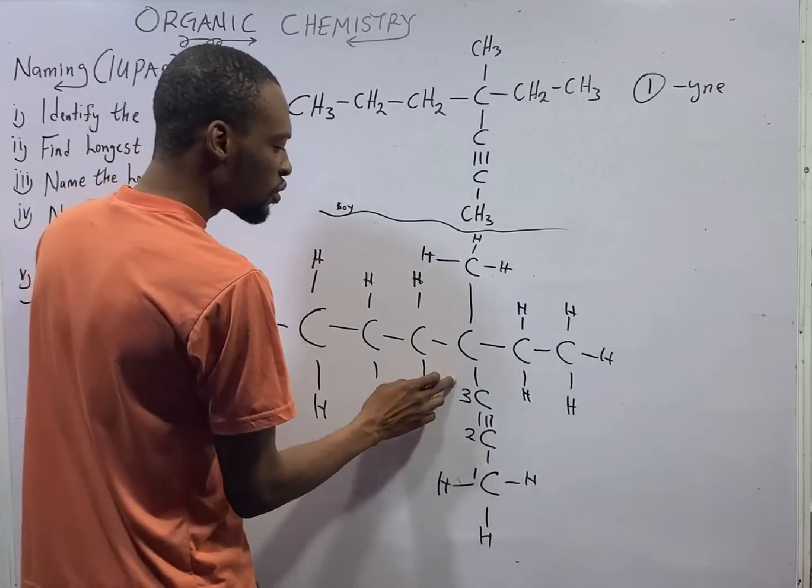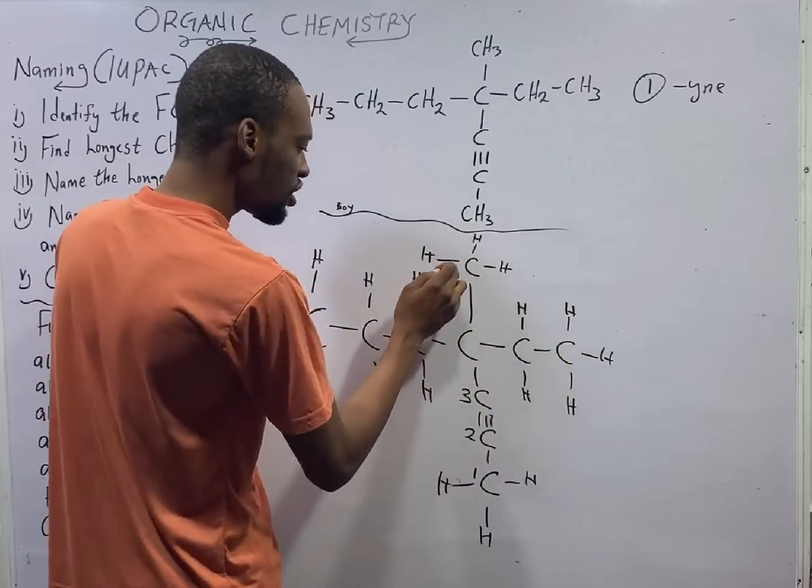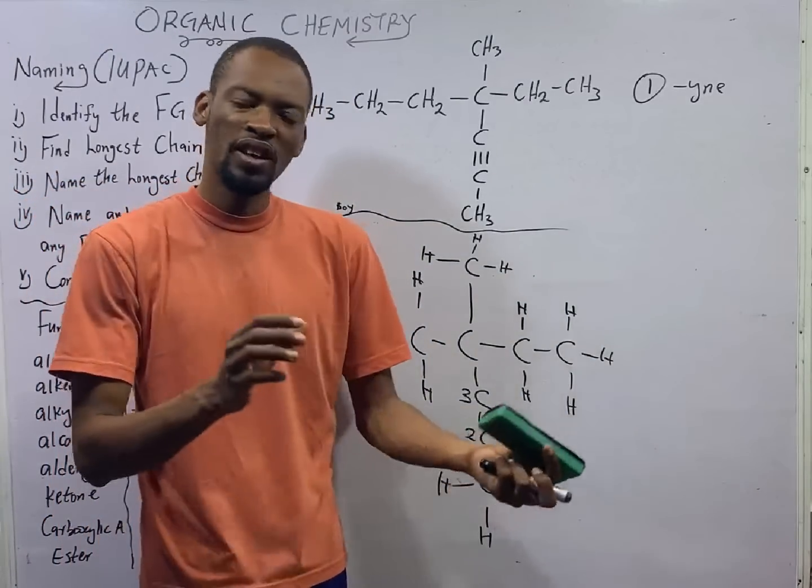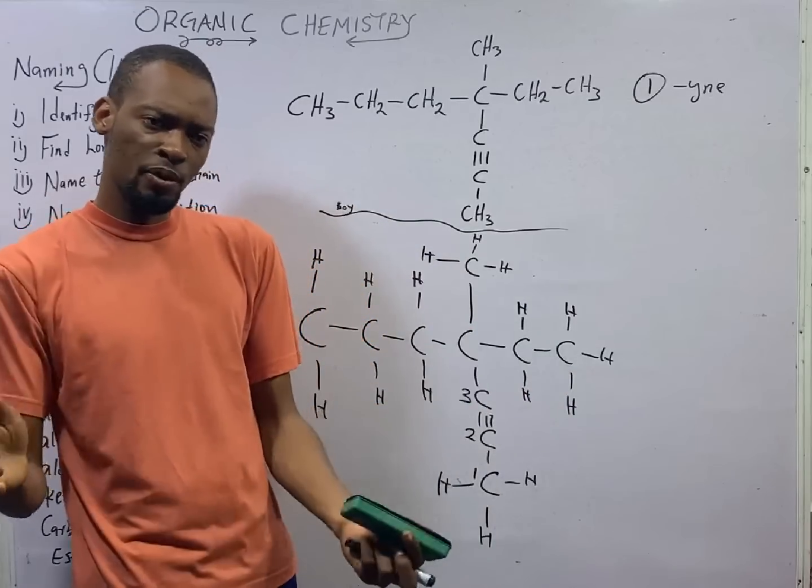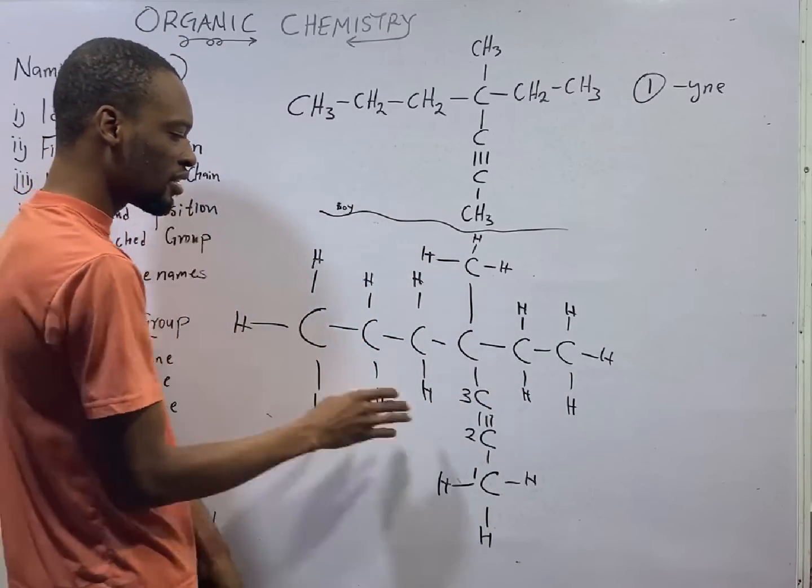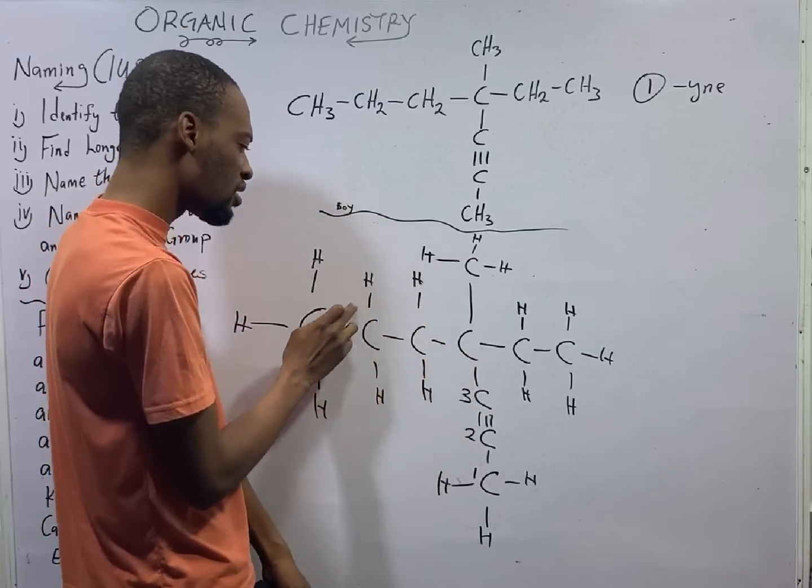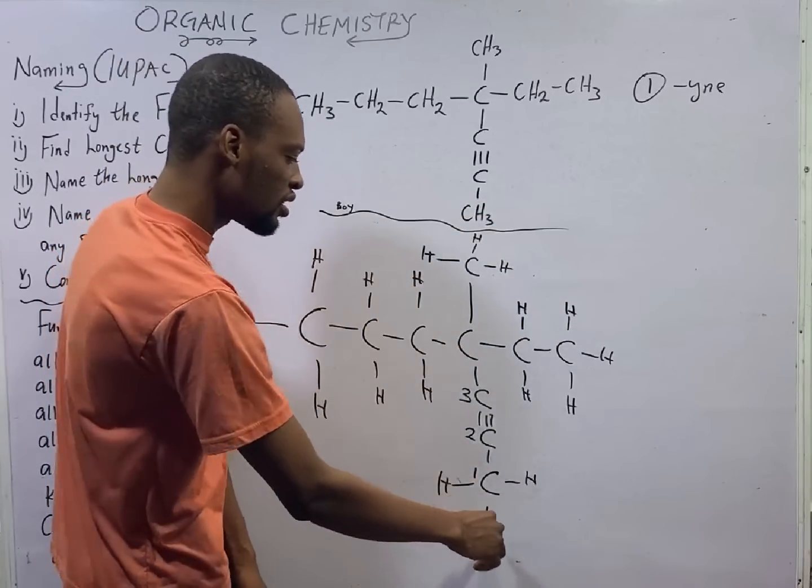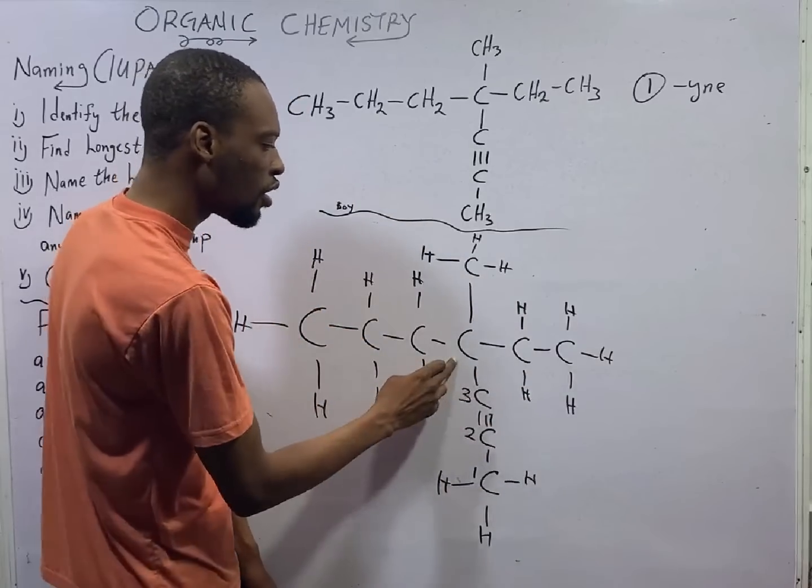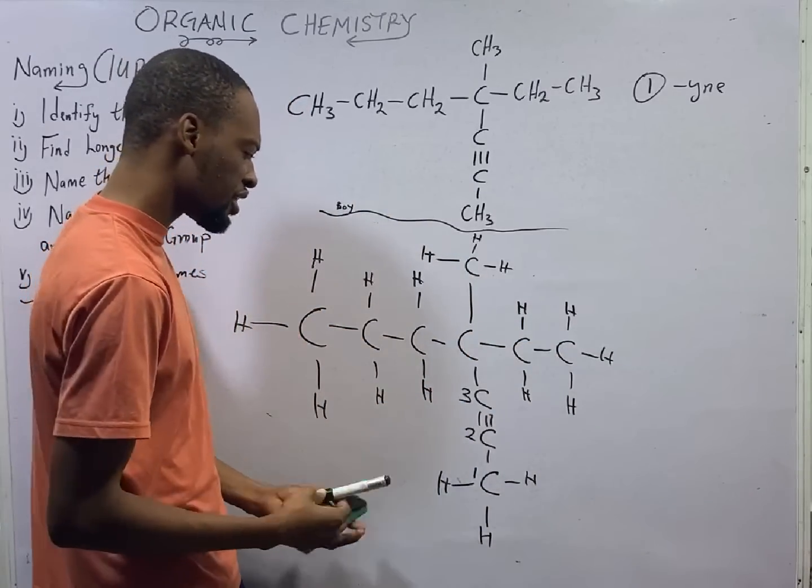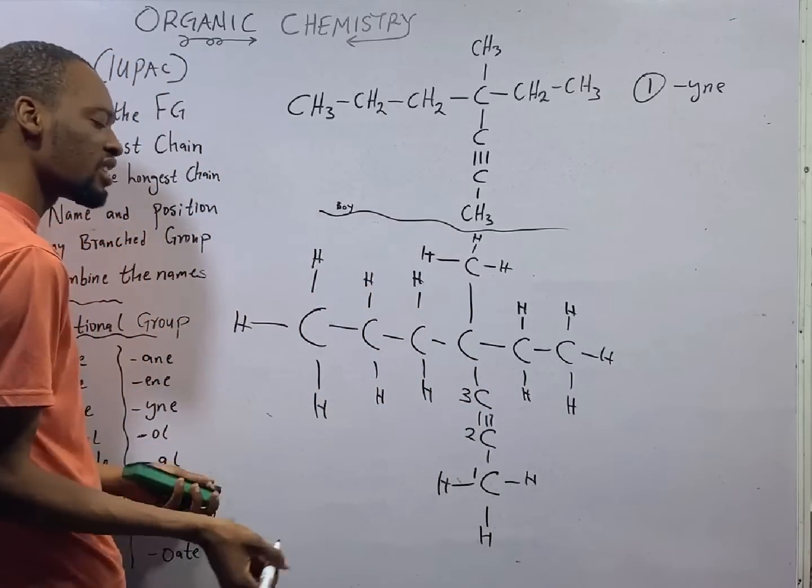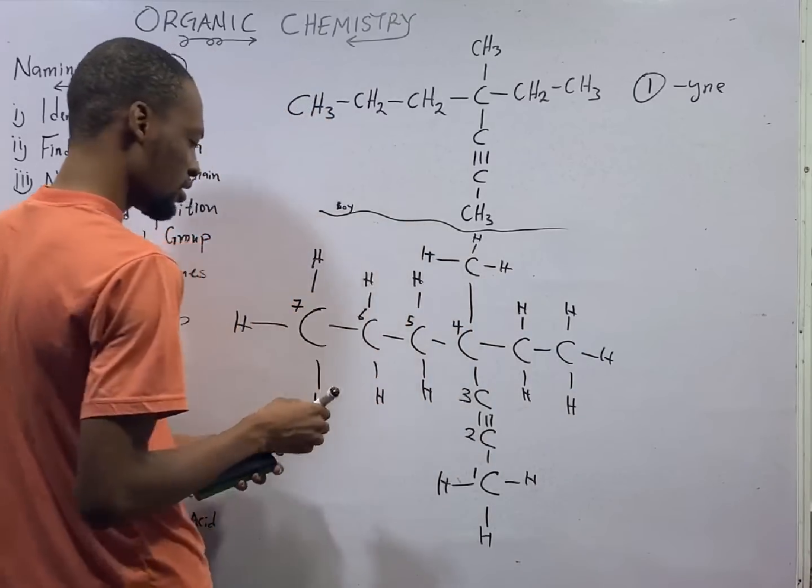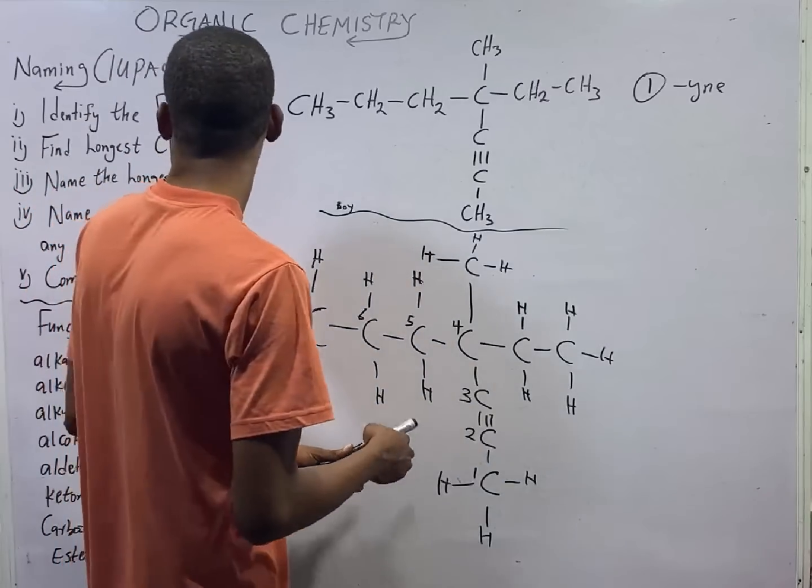From 3, you can choose to go this way, you can choose to go straight, you can choose to go this way. The one you finally choose will depend on the one that will give you the longest continuous carbon. If you choose to go this way, you have 3, 4, 5, 6, 7. If you choose to go up, you have 4, 5. If you choose to go straight to this side, you have 4, 5, and 6. This side gives the longest chain. So that would be 4, 5, 6, and 7. We have identified the longest chain.